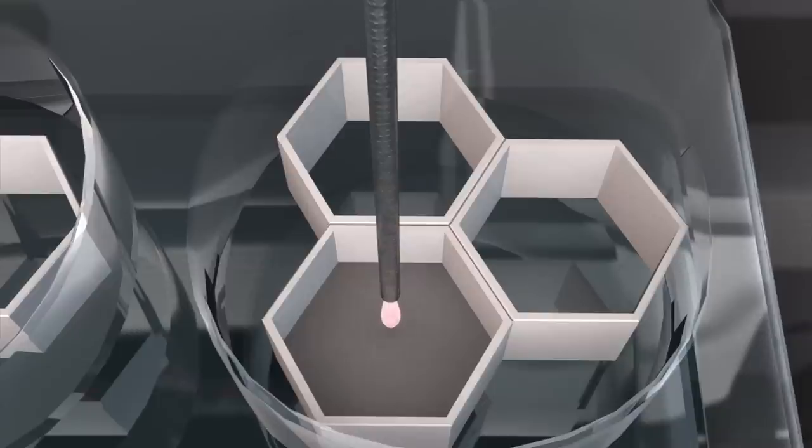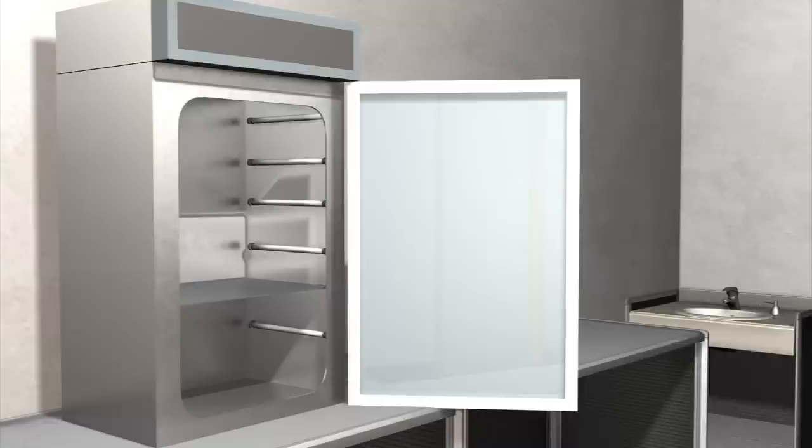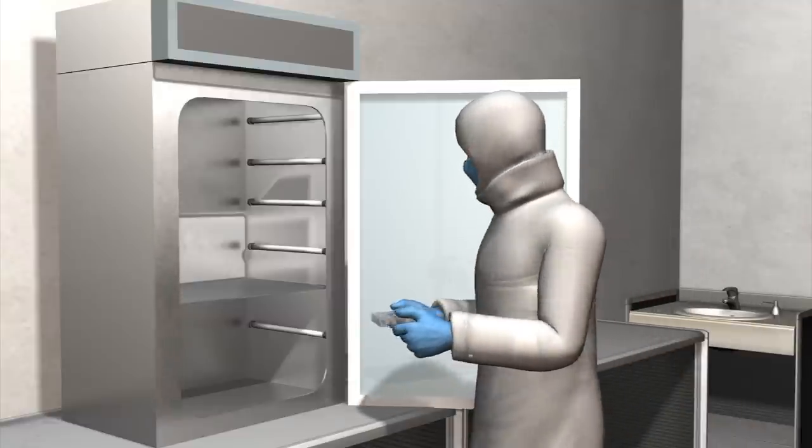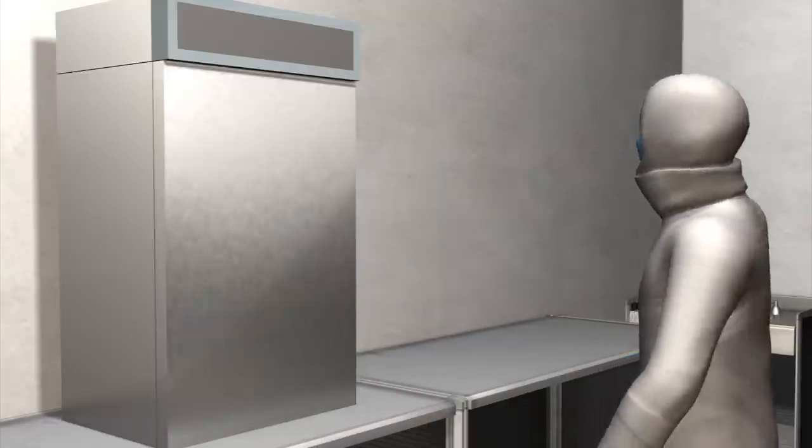Once the different cells are mixed, the well plate is placed into an incubator where they continue fusing until they eventually form the complex matrix of a liver tissue.